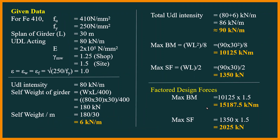Step one: given data. For FE 410 steel: Fu and Fy are as specified. Span of girder = 30 m, UDL = 80 kN/m, modulus of elasticity E = 2×10⁵ N/mm². The epsilon value for web and flange is 1, as we are using FE 410 steel grade.